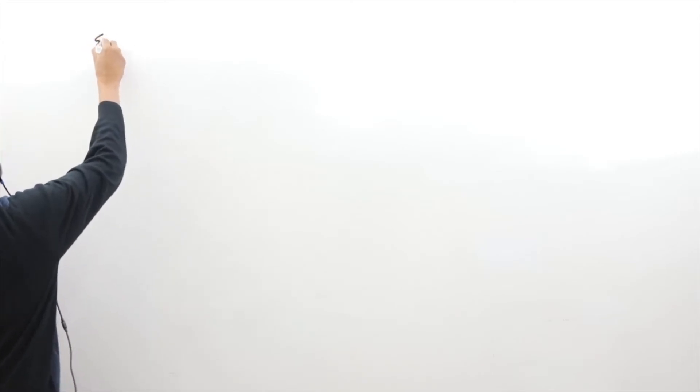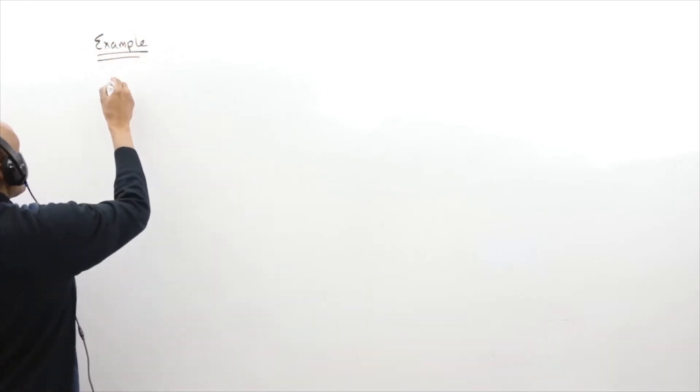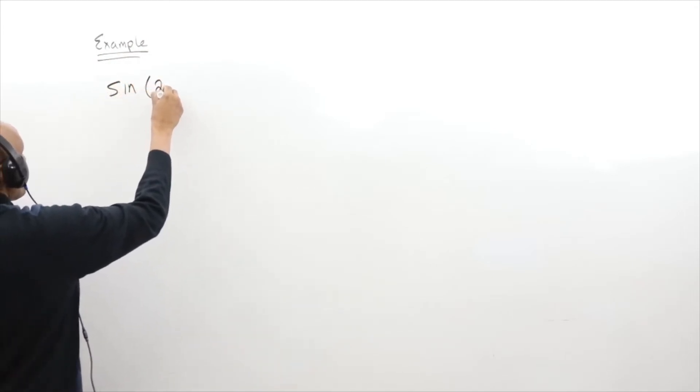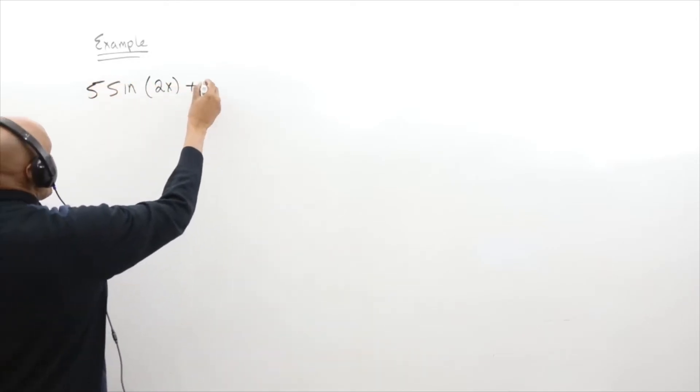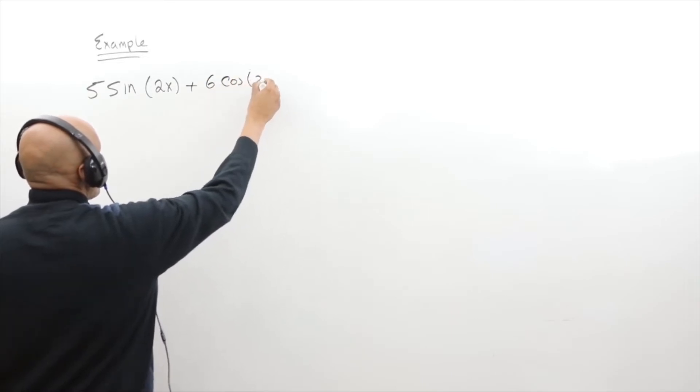In this video I'm going to solve a problem of adding sine and cosine functions. So I am given that I have to evaluate 5 sine of 2x plus 6 cosine of 2x.